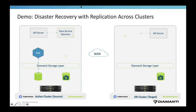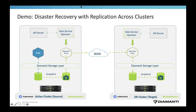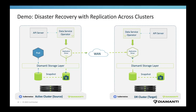For this demo I have two clusters: one is the primary cluster, also called the active cluster, and the other on the right is the DR cluster. There is an application running on the primary cluster using a Diamante volume. When you set up replication across clusters, there is a driver that runs within the cluster to facilitate this operation. On the primary cluster, a snapshot of a volume is taken, and this snapshot is used by the replication driver to copy the data onto the DR cluster. On the DR cluster, another snapshot of the volume is taken — this is done to keep the snapshots consistent across both the primary and DR clusters.